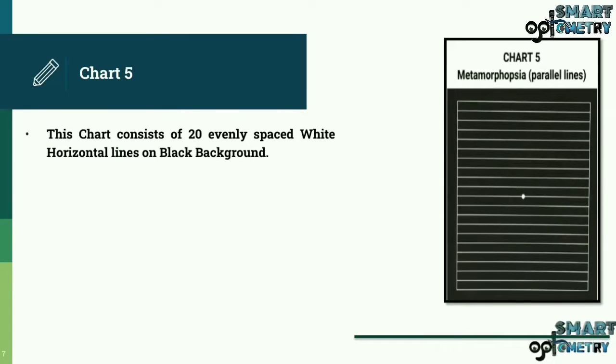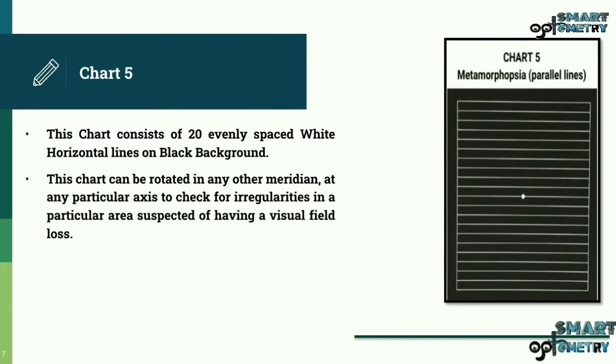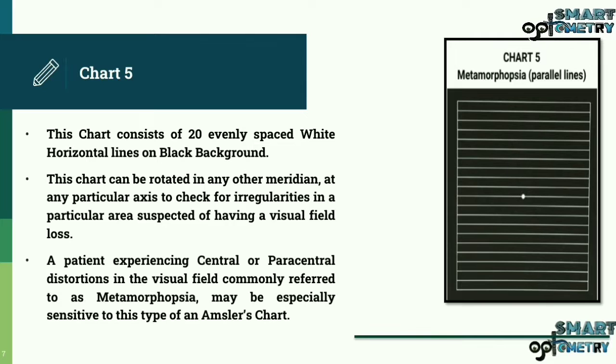Chart 5. This chart consists of 20 evenly spaced white horizontal lines on black background. This chart can be rotated in any other meridian at any particular axis to check for irregularities in a particular area suspected of having a visual field loss. A patient experiencing central or paracentral distortions in the visual field, commonly referred to as metamorphopsia, may be especially sensitive to this type of Amsler's chart. Here you can see the Amsler's chart having a black background with evenly spaced white horizontal lines printed on it.